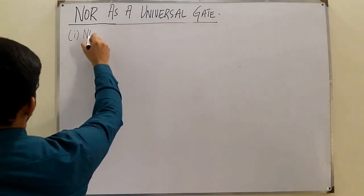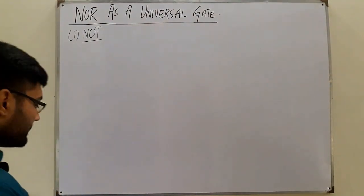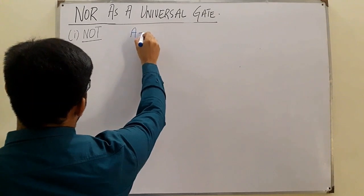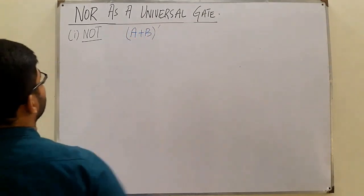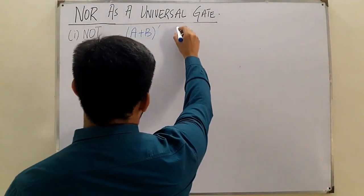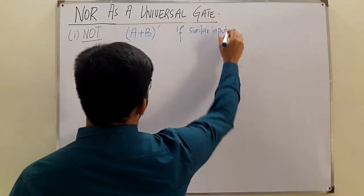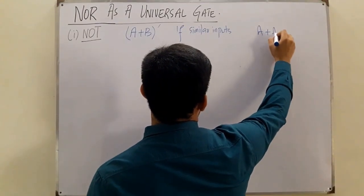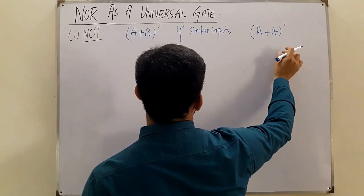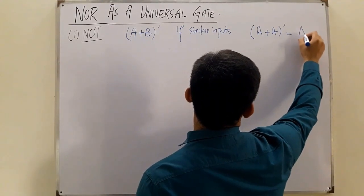First is the NOT gate. The NOR gate is used as a NOT gate. The NOT gate complements its input. For a NOR gate, the function is (A + B) complemented. If you give it similar inputs — A OR with A — zero OR zero is zero, and one OR one is one, so the output is A complemented.